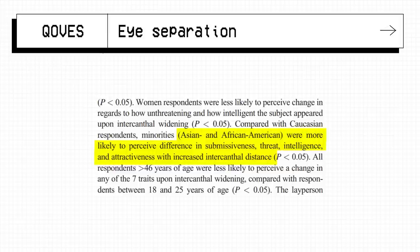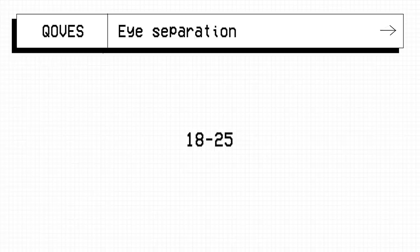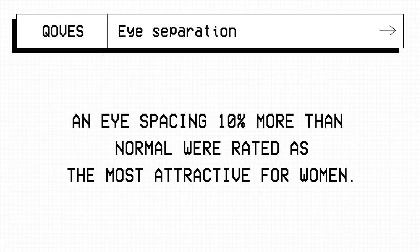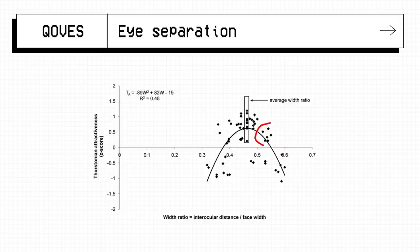Respondents between 18-25 were highly sensitive to the distance of the eyes and most interestingly an eye spacing 10% more than normal were rated as the most attractive for women. This supports the other graph where 10% from normal would typically fall into this range.